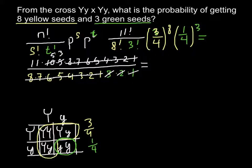What we are left with is 11, 5, and 3. If we multiply 11 by 5 we get 55, and multiplied by 3 we get 165. We have solved the left part of the formula. This represents the probability of having 8 seeds of one kind — the yellow seeds — and the probability of getting green seeds out of a total of 11 seeds.